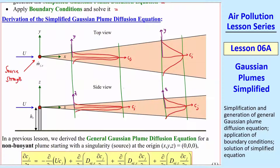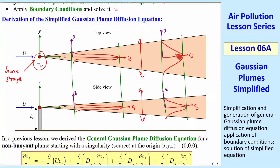Review from last time: we have a source strength, which was a singularity right at the origin. The plume diffuses in the vertical direction — that's from the side view — and from the top view it's diffusing in the y direction. We expect a Gaussian shape. In fact, mathematically this will turn out to be a Gaussian when we solve it. You have a Gaussian in both the y and z directions, and it diffuses so the Gaussian spreads out and the magnitude in the middle gets smaller.